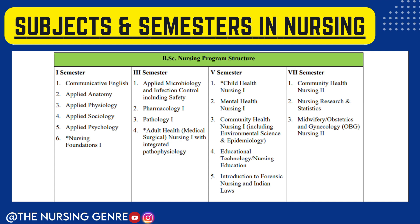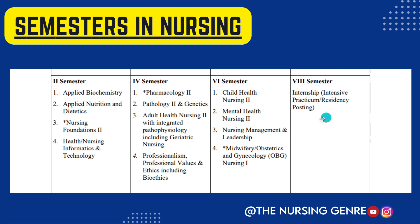If you are in first, second, and third year, you are eligible for all subjects in the fourth year. To enter the seventh semester, you have to pass every subject in the sixth semester. Seventh semester subjects, which is fourth year, include Community Health Nursing 2, Nursing Research and Statistics, and Midwifery and Obstetrics and Gynecology Nursing 2. This is the program structure for BSc Nursing. The eighth semester completes the internship. These are the semester subjects in BSc Nursing as per 2024.